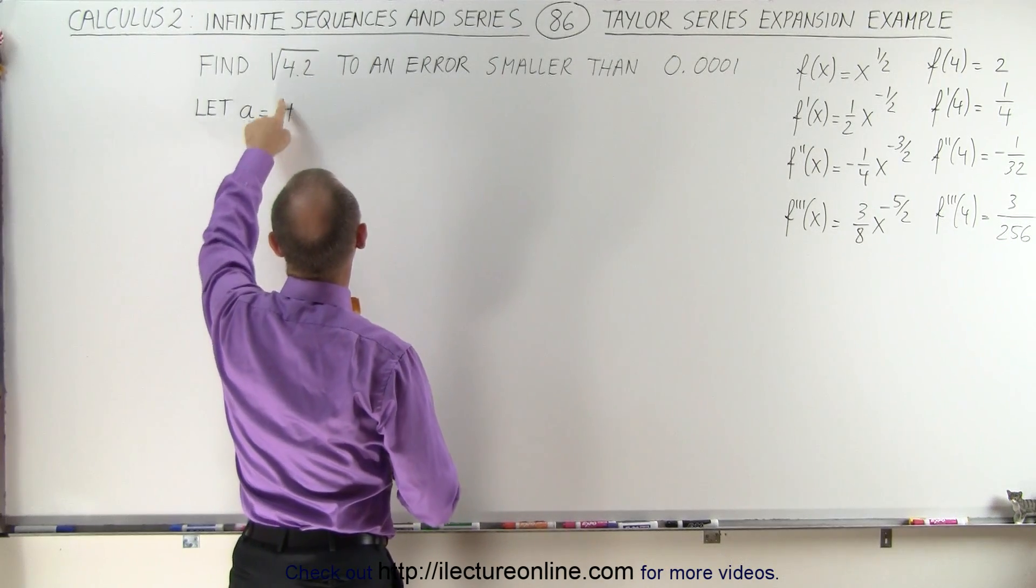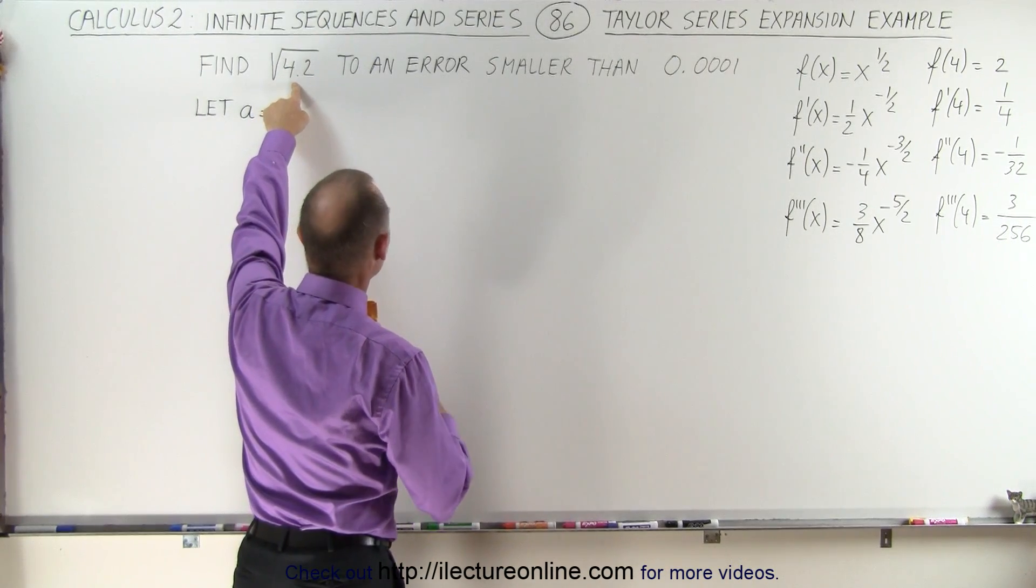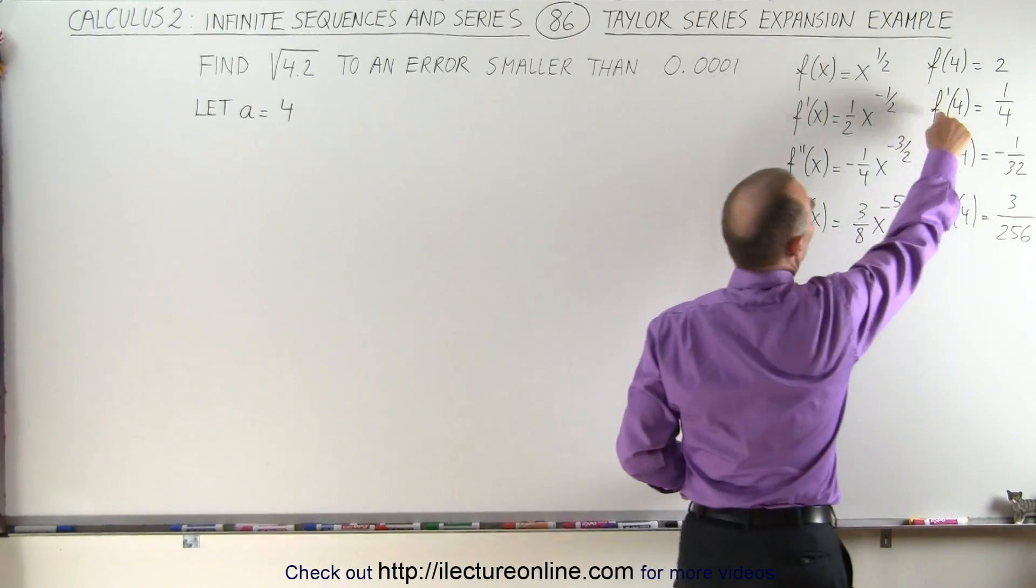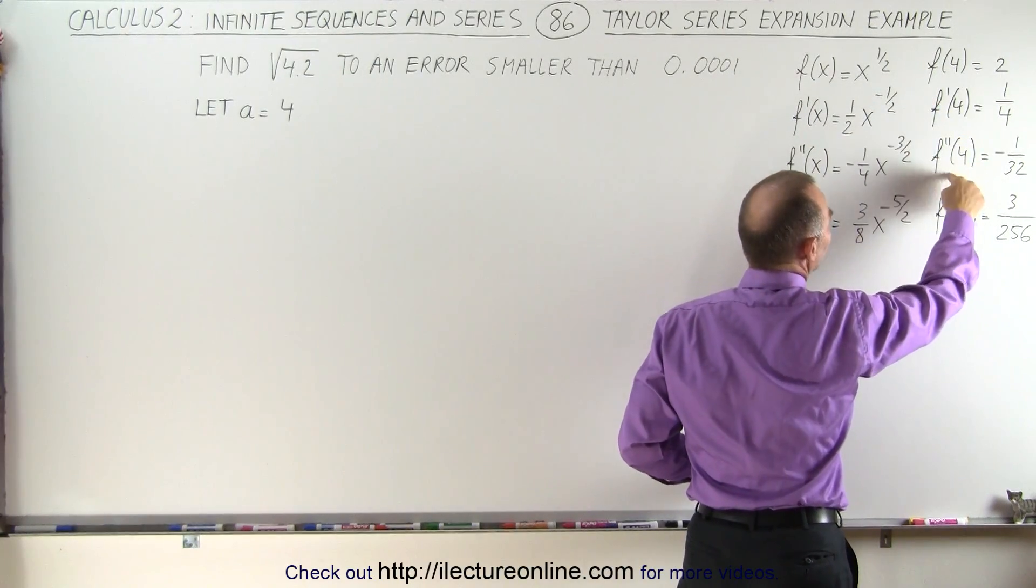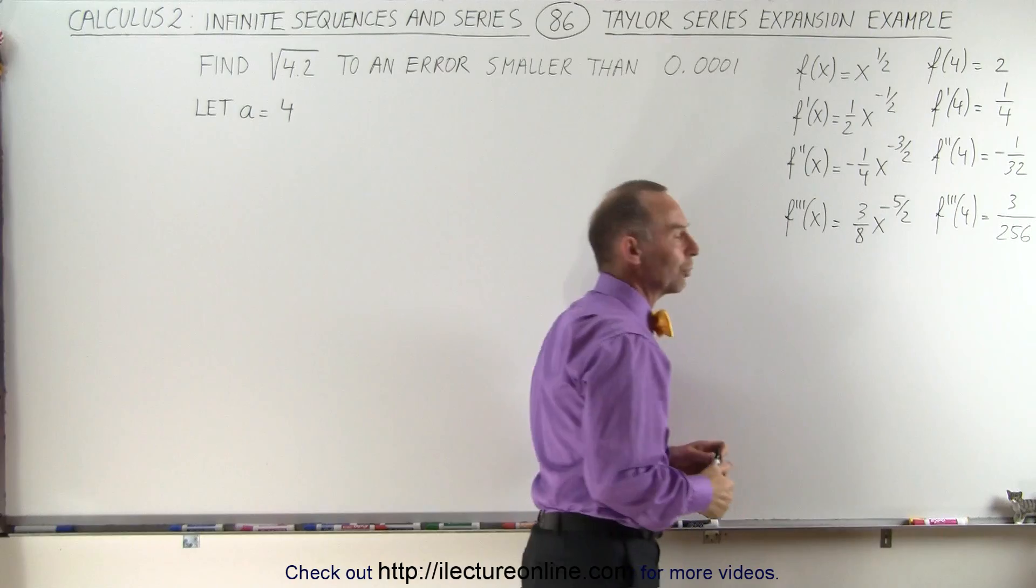We're going to pick a equal to a value close to the value of x at which we have to evaluate it, and so we then find f of 4, f prime of 4, f double prime of 4, and f triple prime of 4.